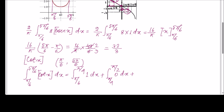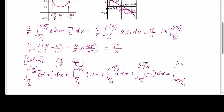At 3π/4, cot x = −1 and at 5π/6 it is approximately −√3. Since −1 is the minimum and we take the floor, [cot x] = −1 from π/2 to 3π/4, and from 3π/4 to 5π/6 the value is −2. So the last sub-interval gives [cot x] = −2 dx.